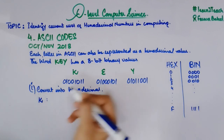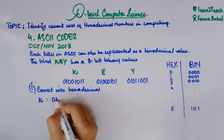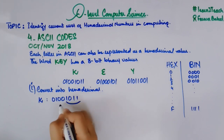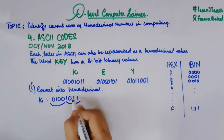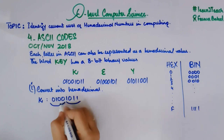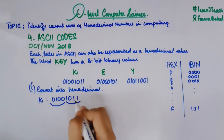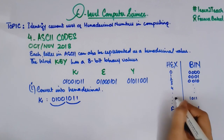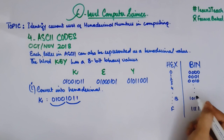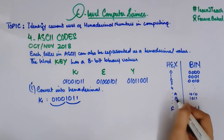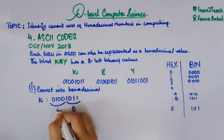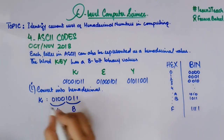For K, I have the binary value 0 1 0 0 1 0 1 1. I am going to make groups of four binary bits. The lower group is 1 0 1 1, and the upper group is 0 1 0 0. In the table, 1 0 1 1 is equal to B, and 1 0 1 0 is equal to A, so 1 0 1 1 is B. And 0 1 0 0 is 4. So the hexadecimal equivalent of K is 4B.